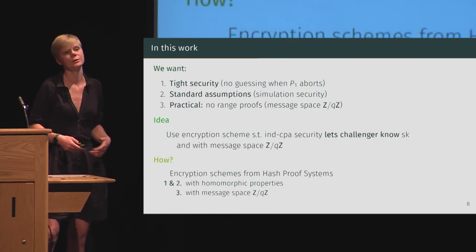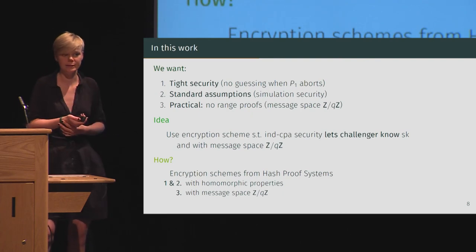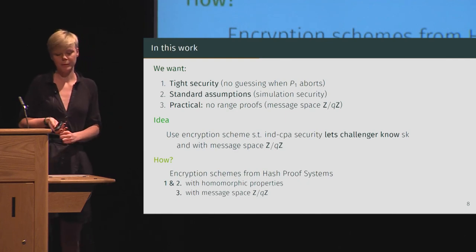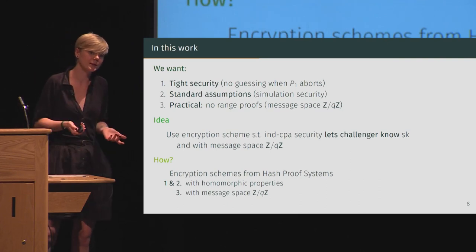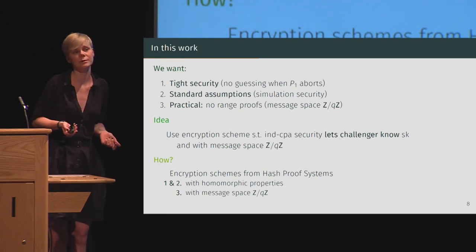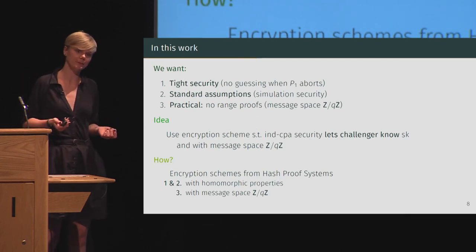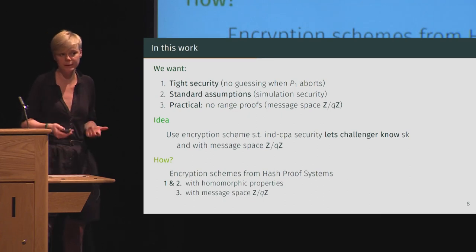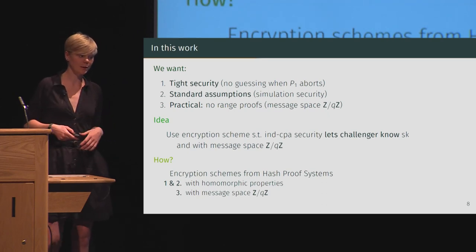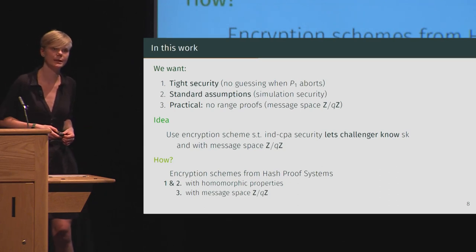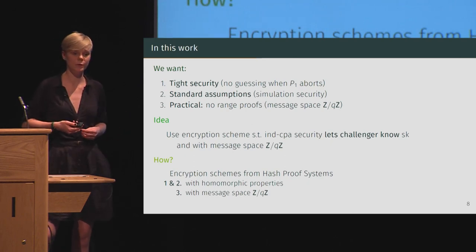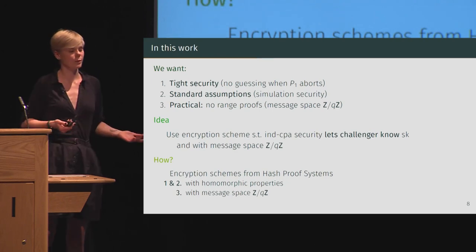In our work, we wanted to provide a two-party protocol for ECDSA which is efficient both in terms of computational complexity and bandwidth, which doesn't require any non-standard interactive assumptions, and which has a tight security proof. To this end, we need a linearly homomorphic encryption scheme where security doesn't rely on the challenger not knowing the secret key. If we can further have an encryption scheme where the message space is of prime order, we can remove the range proofs. We achieve this by using linearly homomorphic encryption schemes from hash proof systems, and when we instantiate this generic construction with a hash proof system from class groups, we can also remove the range proofs.